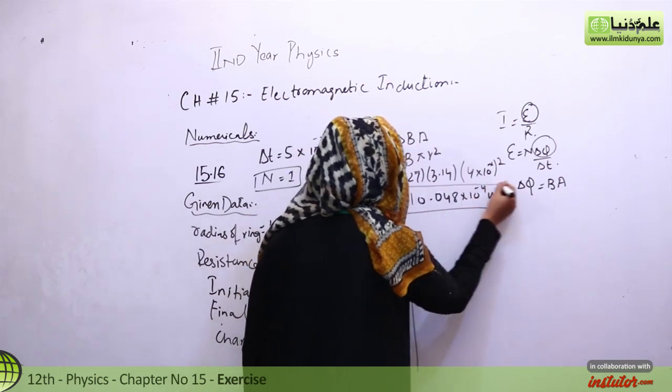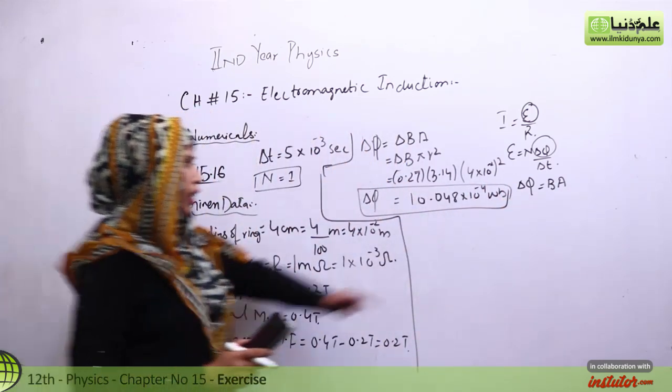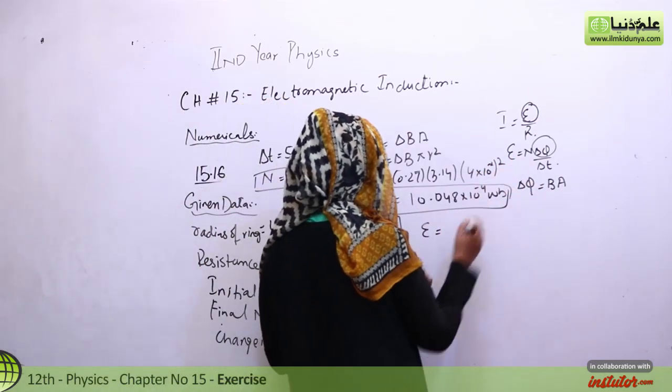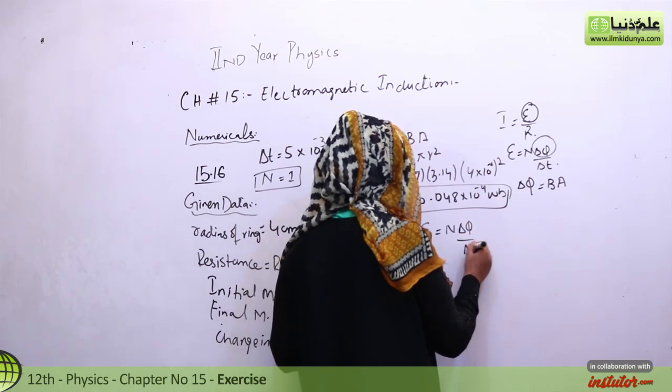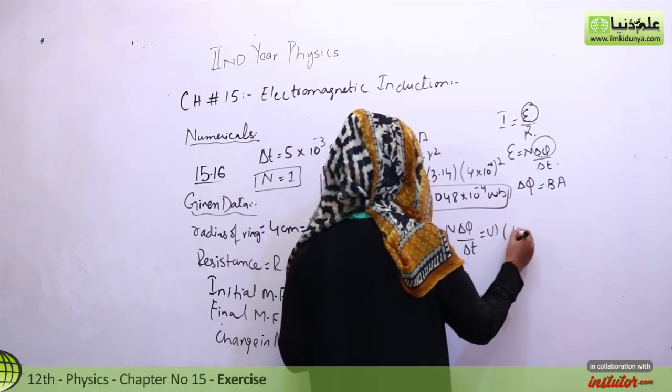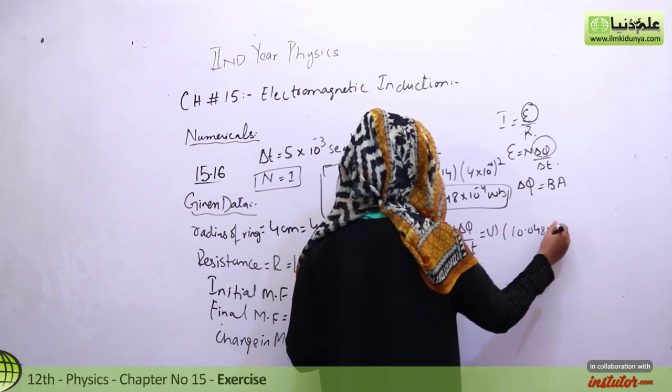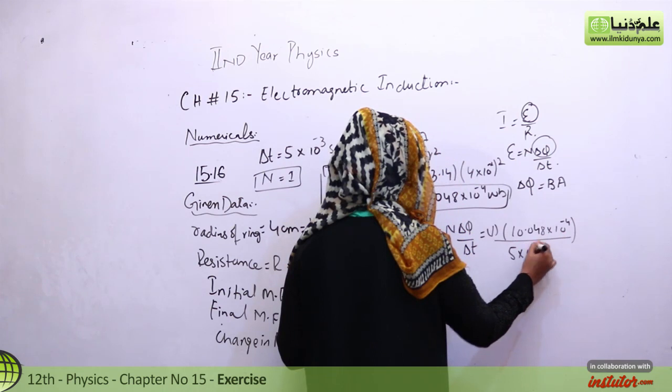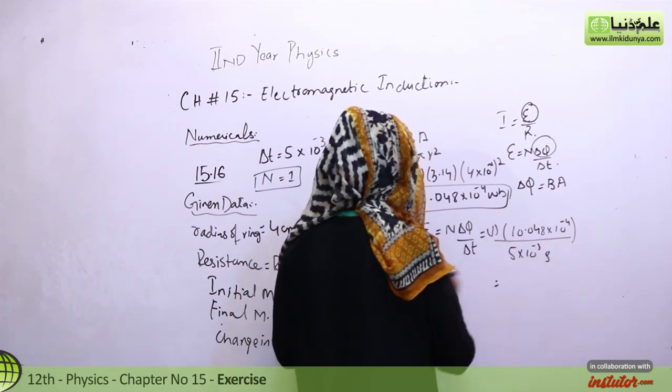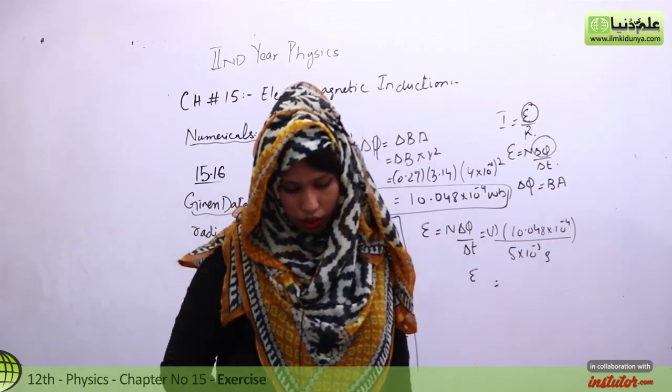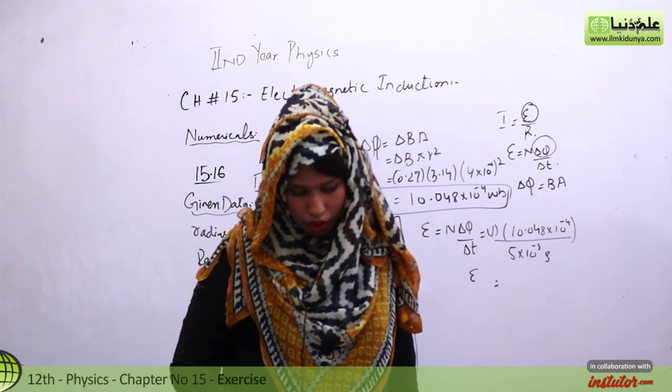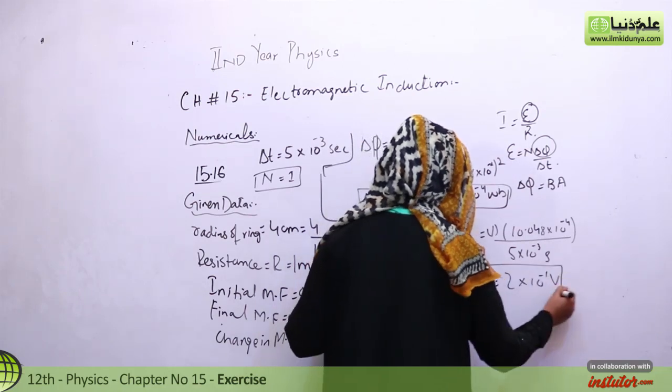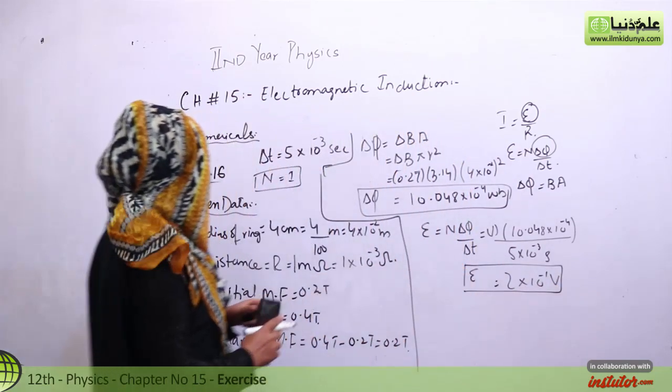Now students, we will find the induced EMF value. We divide this value by the time, which is 5 times 10 to the power minus 3 seconds. The induced EMF that we have solved is 2 times 10 to the power minus 1 volts.